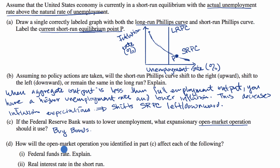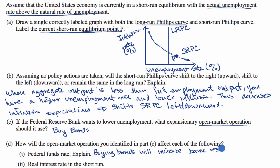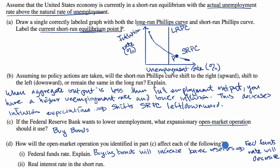Part D: how will the open market operation identified in Part C affect the federal funds rate? Buying bonds will increase bank reserves, which will lead the federal funds rate to decrease. The federal funds rate is the rate at which banks borrow reserves from each other. If there are more reserves now, there's less demand to borrow and more supply of reserves, so the cost of borrowing — the federal funds rate — will decrease.